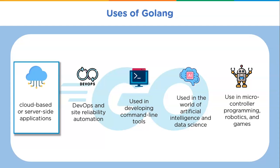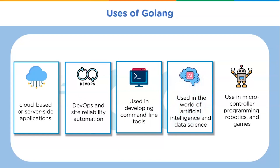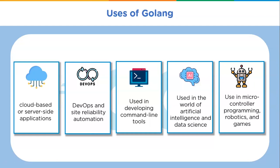Many standout cloud platforms like Kubernetes were built with Go. Google Cloud also uses Go to enhance scalability and performance. DevOps and site reliability automation are also popular use cases. Many command line tools are written in Go. Go is also used in artificial intelligence, data science, microcontroller programming, robotics, and game software. Go shines most in infrastructure — popular tools like Kubernetes, Docker, and Prometheus are written in Go.